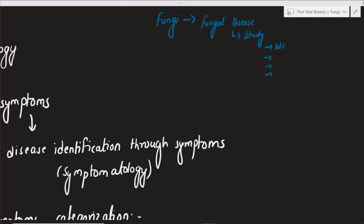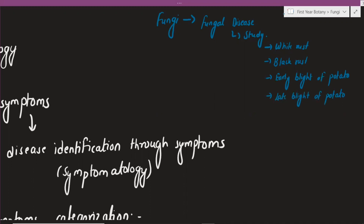What is the white rust disease? I will tell you about the white rust disease. This is the black rust and it is opposite — white rust and black rust. Some of you may know the early blight of potatoes. Early blight of potato, late blight of potato, and white rust or black rust are important topics in this subject.